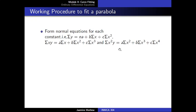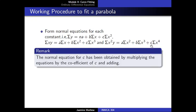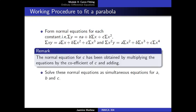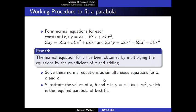To get the normal equation corresponding to c, we multiply the equation throughout by the coefficient of c, that is x square, and adding together, we obtain the normal equation as sigma x square y equal to a into sigma x square plus b into sigma x cube plus c into sigma x raise to 4. Now, solve these normal equations as simultaneous equations to get the values of the constants a, b and c.